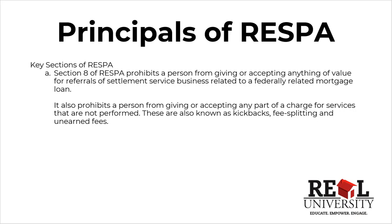The next three are the most common ones, and there's been a huge change in one coming up right now. Section 8 of RESPA prohibits a person from giving or accepting anything of value for referrals or settlement service businesses related to a federally related mortgage loan. In other words, you can't give kickbacks, you can't give loan splitting, fee splitting, or a professional services fee — call it whatever you want to call it. It's a violation to give anything of value.